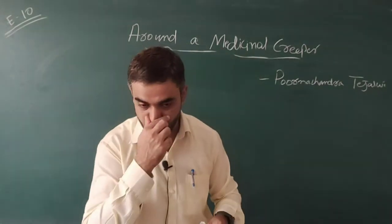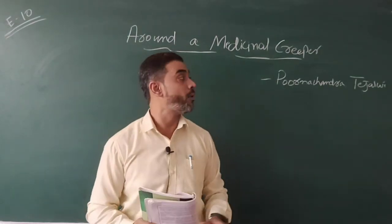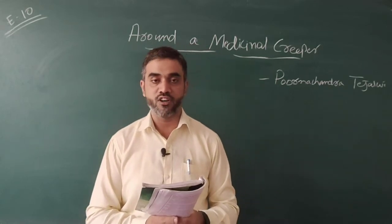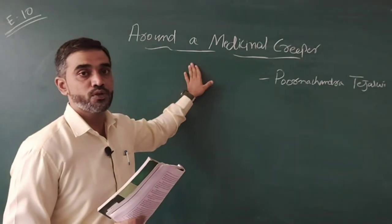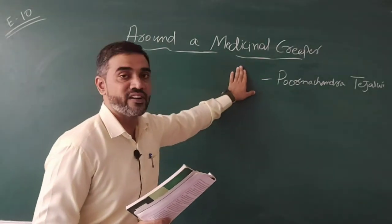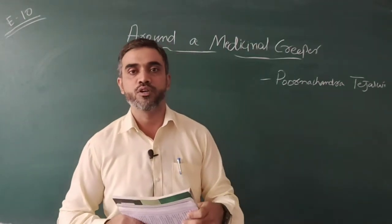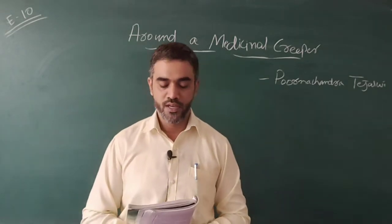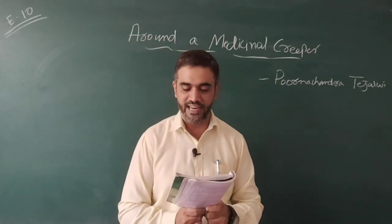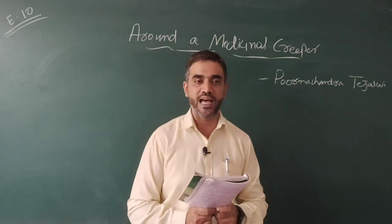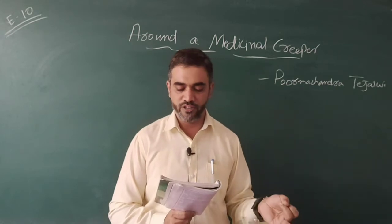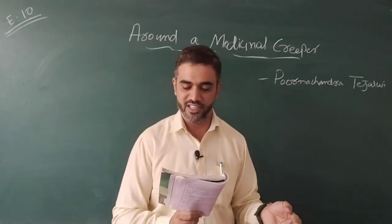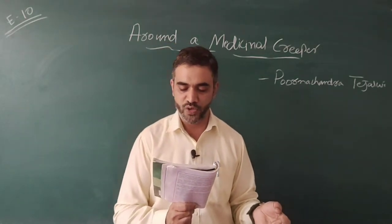On page number 25 in your textbooks, you'll find a note on the author. This story was originally written in the Kannada language and has been translated by K.M. Srinivasakoda. The original author, K.P. Purna Chandra Tejasvi, was born in 1938 and lived until 2007. He is a prominent Kannada writer, novelist, photographer, ornithologist, publisher, painter, and environmentalist.